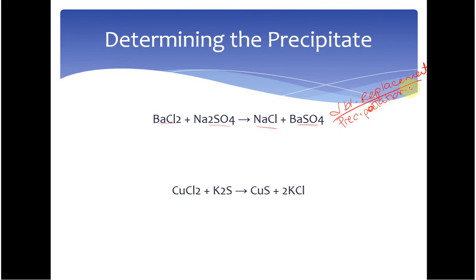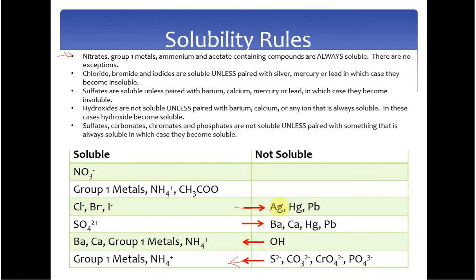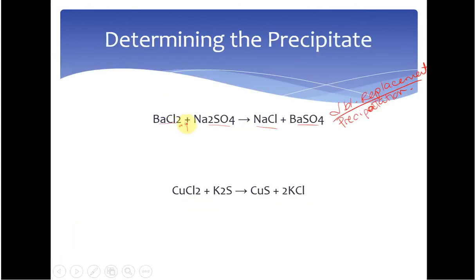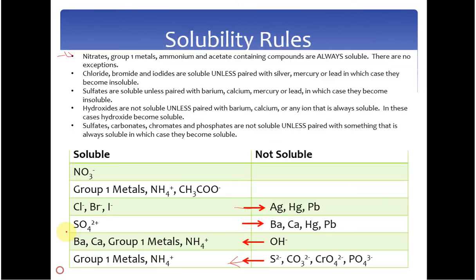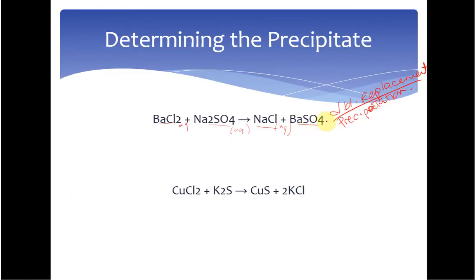Now let's look at solubility. Barium chloride: chlorides are soluble unless they're silver, mercury, or lead, so this must be aqueous. Sodium sulfate: group 1 metal, has to be soluble and aqueous. NaCl: group 1 metal, always soluble and aqueous. Barium sulfate: sulfates are soluble — oh, unless they're with barium. So this must be our solid or our precipitate.